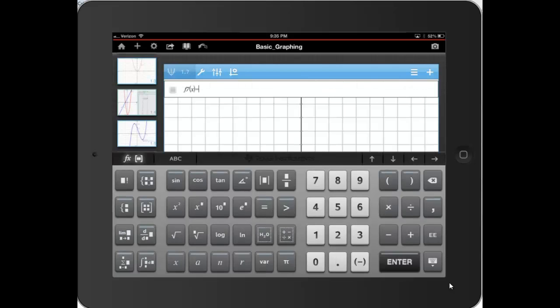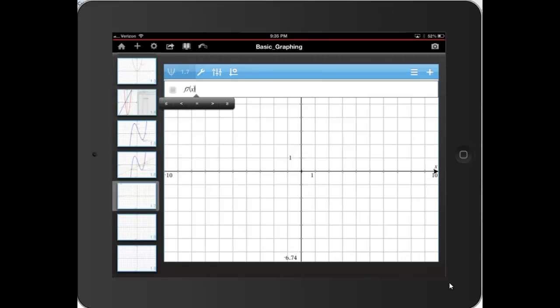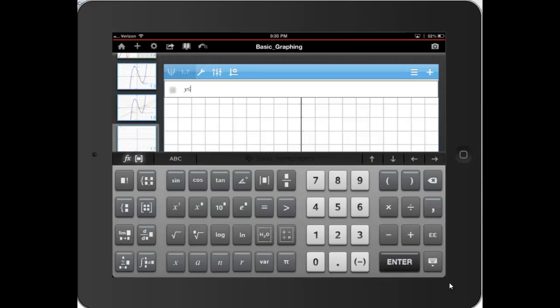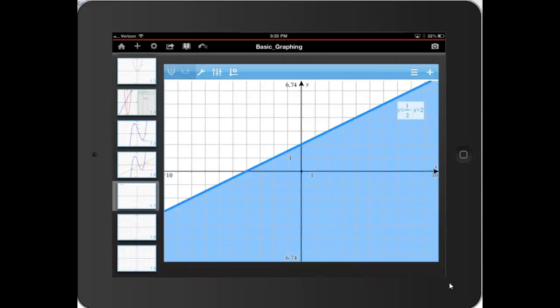Inequalities. Double tap. If you delete the equal sign, notice you get inequality signs and equal signs there. So I'm going to go ahead and graph y is less than or equal to 1 half x plus 2. You'll notice a solid line there in the shading.